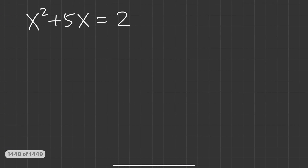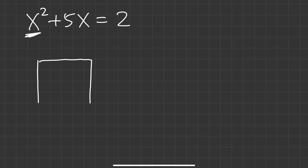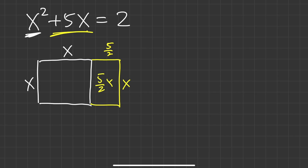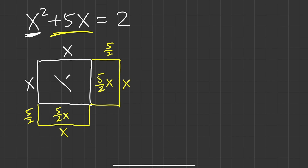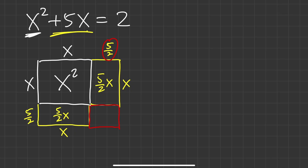Now let's try another one: x squared plus 5x equals 2. The x squared means we have a square, with each side equal to x. For 5x, do 5 divided by 2, giving 5 over 2. So we have a 5/2-by-x rectangle on each side of the square, making 5/2 · x plus another 5/2 · x, which totals 5x.